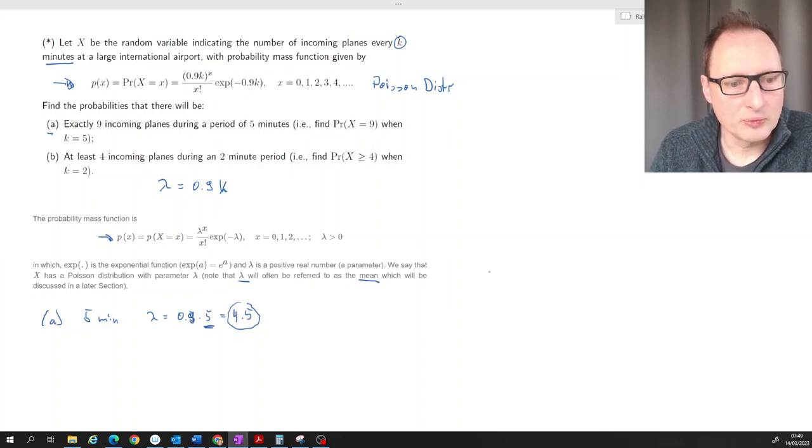So once we have that value, that lambda, we are really just applying this formula here. So what are we asked to calculate? The probability that x is equal to 9.